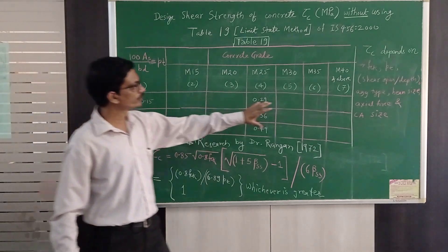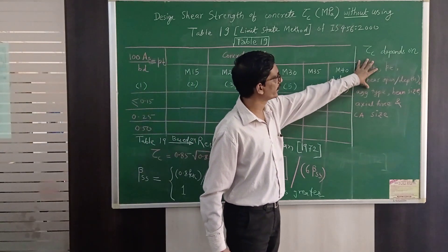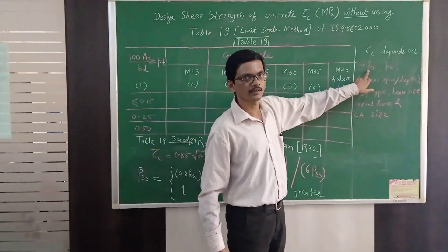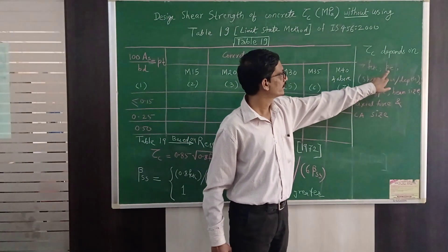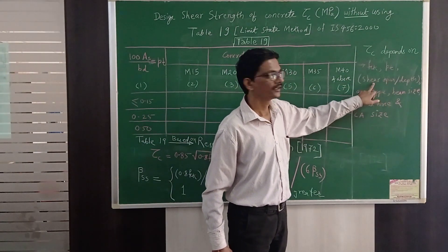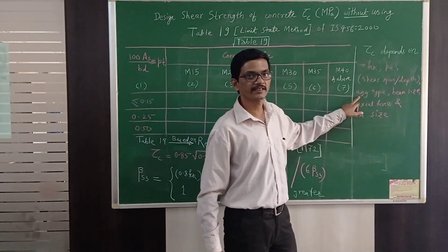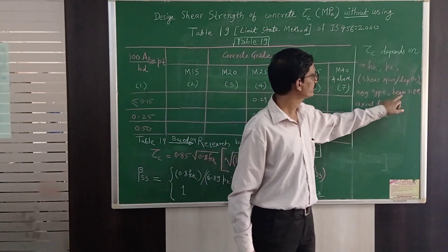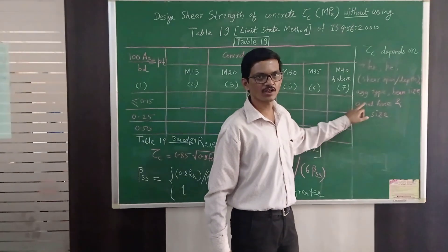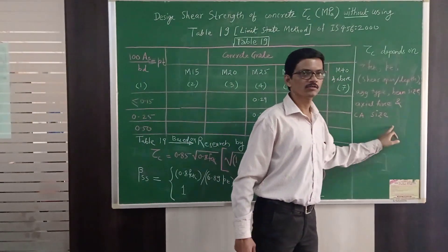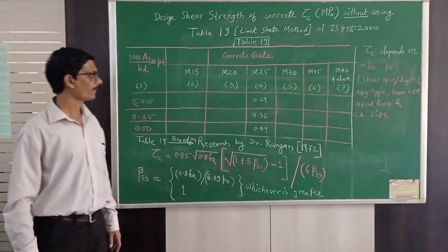This tau c, the value of tau c depends on grade of concrete that is fck, percentage steel, then shear span by depth ratio, type of aggregate use in the concrete, size of the beam, axial force on the beam and coarse aggregate size.